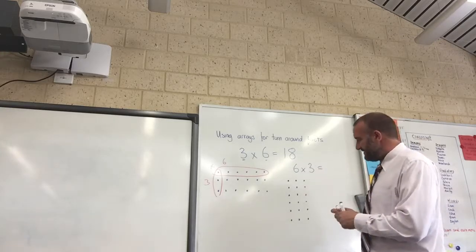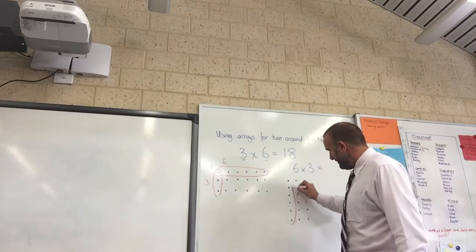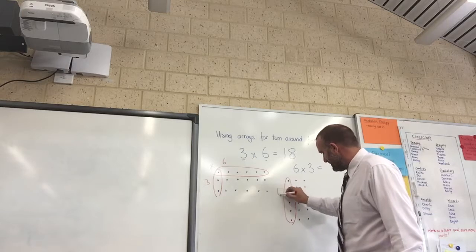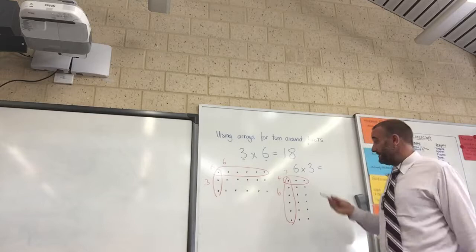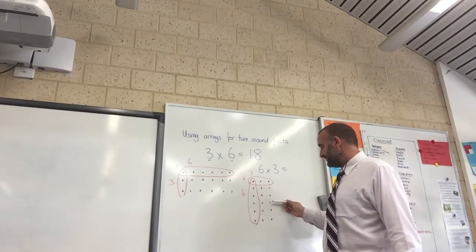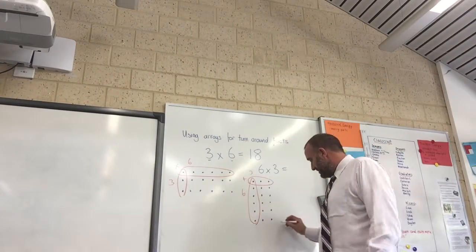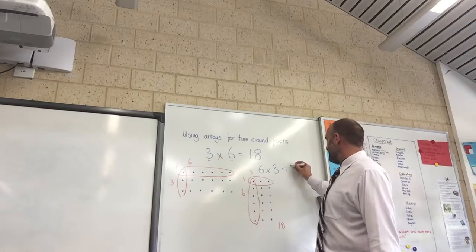So following that turnaround fact, our problem now looks like 6 multiplied by 3. So if we count that, we can see it's 9, 12, 15, 18. You will see that our answer is exactly the same.